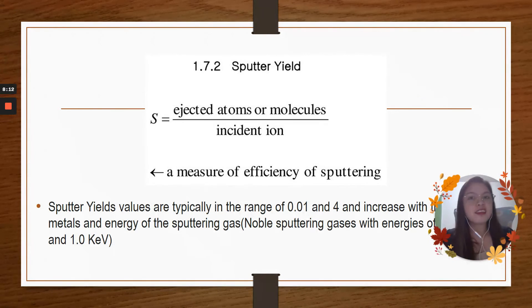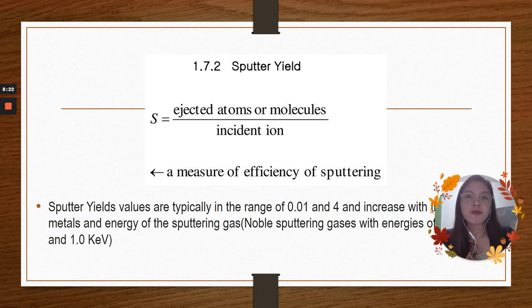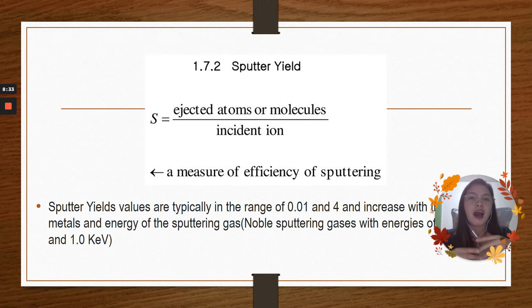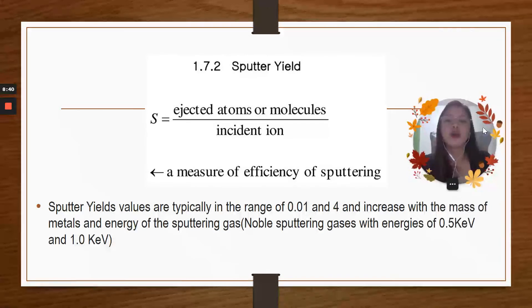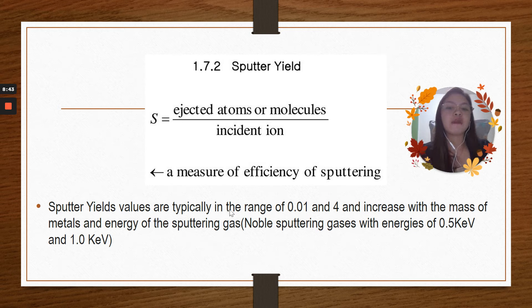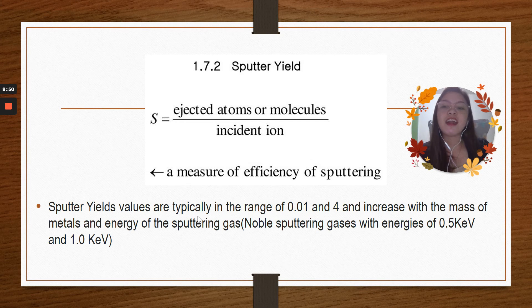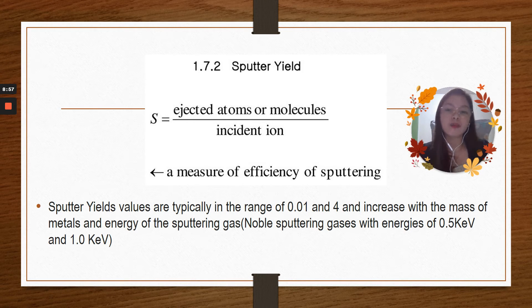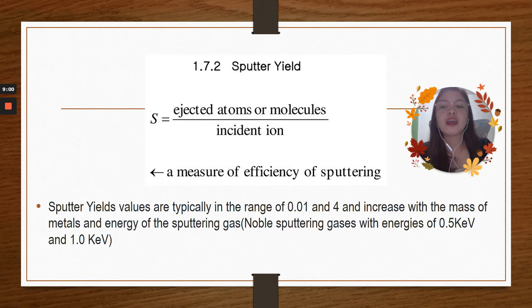After the discussion of the sputtering or ion-sputtering, we have the formula of the sputter yield. How we could get the sputter yield. For the sputtering or the sputter yield, we have to divide ejected atoms or molecules over the incident ion. For the answer of that, that is what we call a measure of efficiency of sputtering. Just like this one, we have the sputter yields. Values are typically in the range of 0.01 and 4 and increase with the mass of metals and energy of the sputtering gas. Noble sputtering gases with energies of 0.5 kiloelectron volt and 1.0 kiloelectron volt.